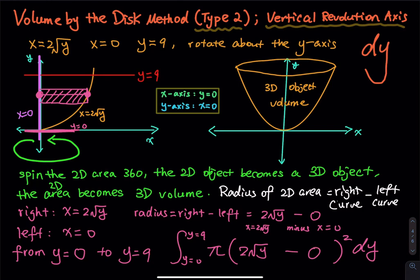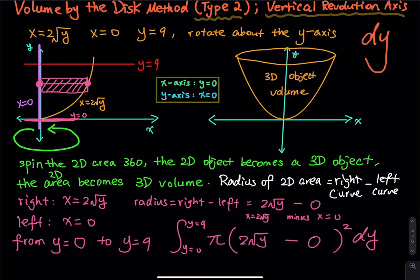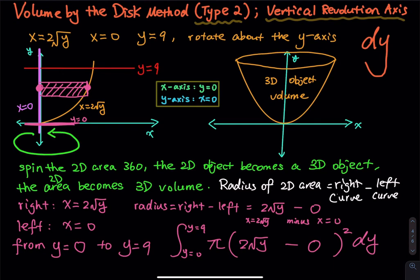I don't recommend skipping the zero. When I ask students to show work on exams and quizzes, I ask them not to simplify the integrand. Three days later, if you look back at your notes and only see 2√y, you might wonder where the second curve is. But if you write 2√y − 0, the right-minus-left structure is clearly preserved.